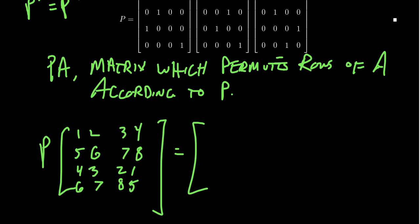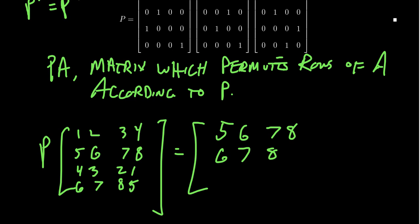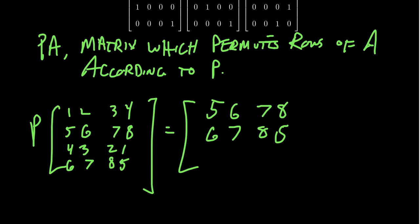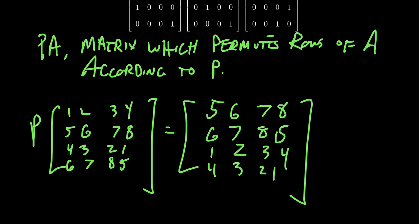Multiplying through: the first row of P grabs the second row of A, giving [5, 6, 7, 8]. The second row of P is [0, 0, 0, 1], so it grabs the fourth row of A, giving [6, 7, 8, 5]. The third row of P, which is [1, 0, 0, 0], grabs the first row of A, giving [1, 2, 3, 4]. The fourth row of P grabs the third row of A, giving [4, 3, 2, 1].